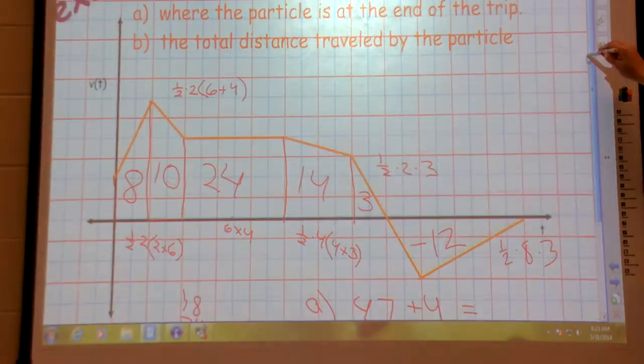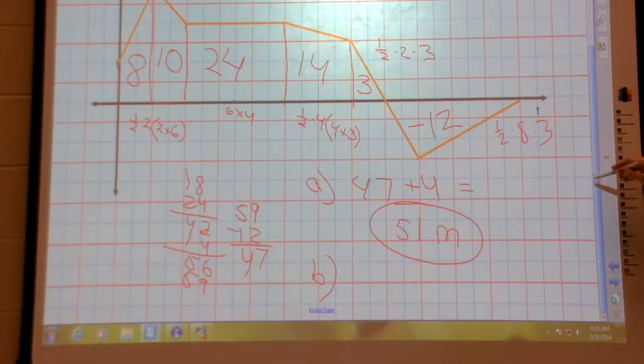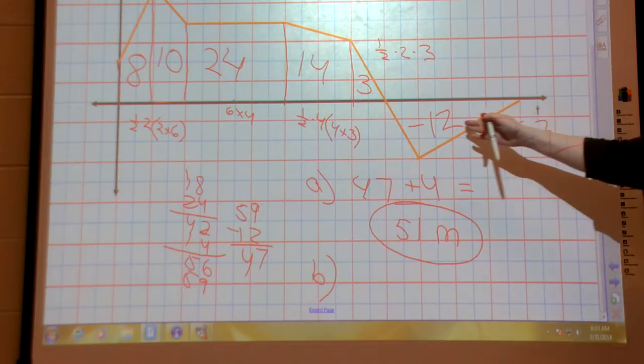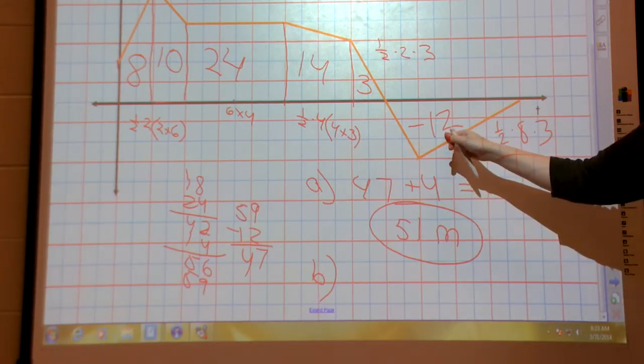That's part A. Part B, total distance traveled, I'm almost doing the same thing. Except this is now plus 12, correct?